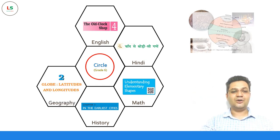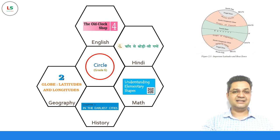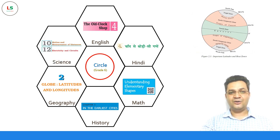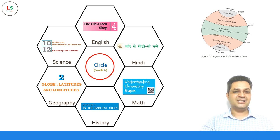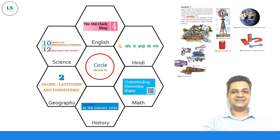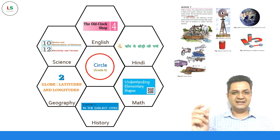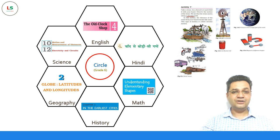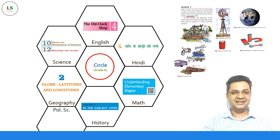In Geography, we talk a lot about latitudes and longitudes. In Science, there are many references to the circle — in the chapters on motion and measurement of distances, and electricity and circuits. There are circular paths on the windmill, the earth, the magnets, the cell which has one end as a disc, and the wheel which puts the entire world into motion.